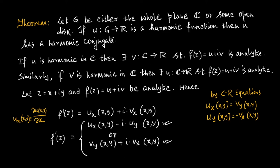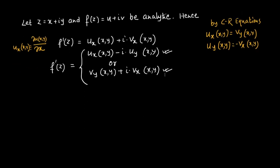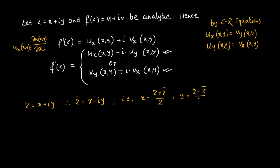So if I know u, I can use the first form; if I know v, I can use the second form. Now let us see if we can simplify this further. We know z = x + iy, so z-bar = x - iy. Therefore, x = (z + z-bar)/2 and y = (z - z-bar)/(2i).